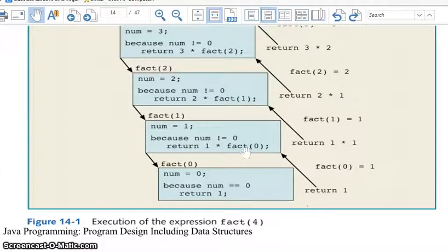So now that I'm returning a one here, this version of fact closes. It's done. It stops execution and it returns control to the open fact of one call. Now I've got a one to stick in here. One times one is one. I've got my answer to return here. This one closes out in memory. The variables are destroyed. It's done.